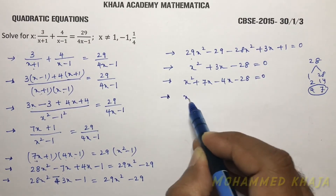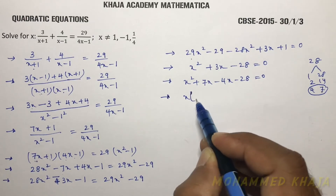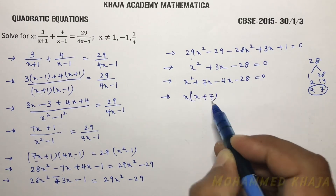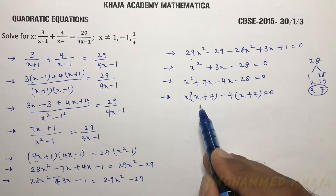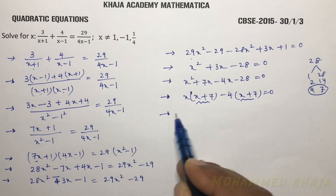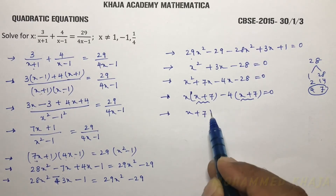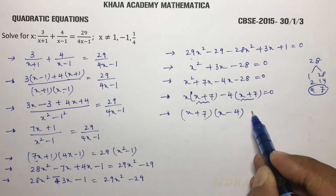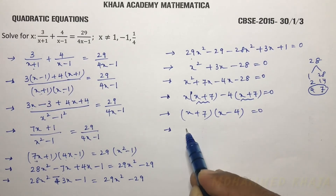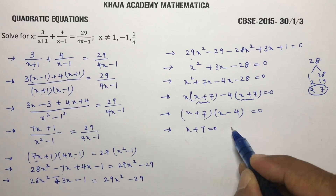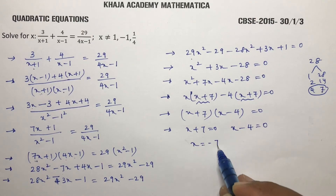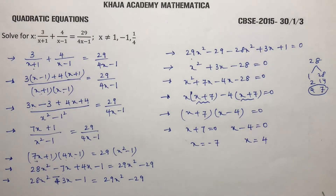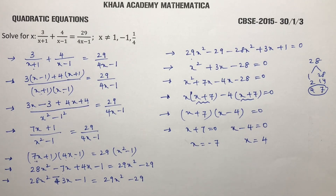Factoring by grouping: from x² + 7x, take x common to get x(x + 7). From -4x - 28, take -4 common to get -4(x + 7). Taking (x + 7) as common factor: (x + 7)(x - 4) = 0. Therefore x + 7 = 0 gives x = -7, and x - 4 = 0 gives x = 4. These are the solutions.